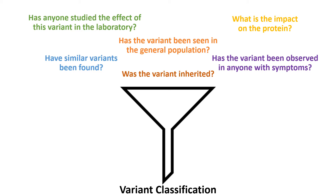Has the variant been seen in the general population or in individuals with symptoms? Was the variant inherited or passed down through the family? Have similar variants been seen in others? The laboratory then puts all of this information together to reach a classification.